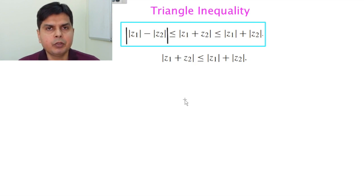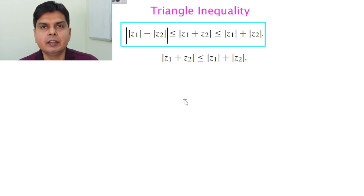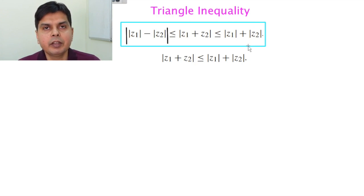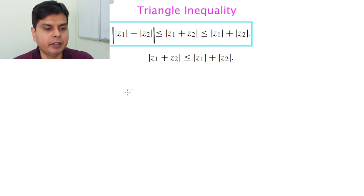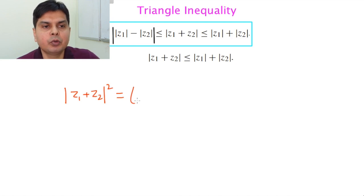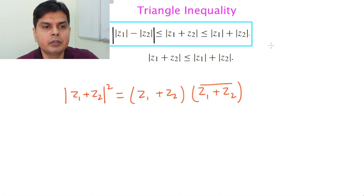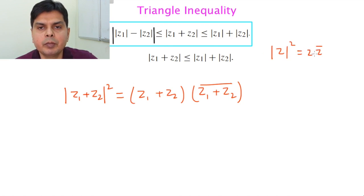Now let's look at the triangle inequality, which is analogous to the triangle theorem: any side of a triangle is less than the sum of the other two sides. We will also identify when equality holds. To derive the proof: |z1 + z2|² can be written as (z1 + z2) · conjugate(z1 + z2), based on the rule that |z|² = z · z̄.